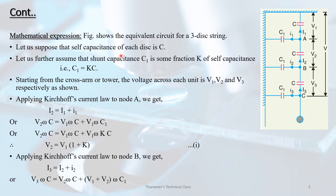Let us suppose the self-capacitance of each disk is C. Let us assume that the shunt capacitance C1 is some fraction K of self-capacitance, so C1 equals K times C. The voltage across each unit is V1, V2, V3 respectively as shown in the equivalent circuit with three discs.